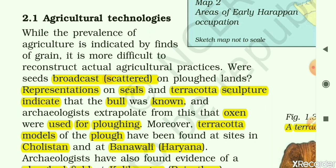It is difficult to reconstruct the actual agricultural practices — how exactly did agriculture take place? Were seeds broadcast or scattered on ploughed land? The farmer would first plough the land, furrows were created, and then they scattered the seeds by taking them in their hands and throwing them — that is known as broadcasting.